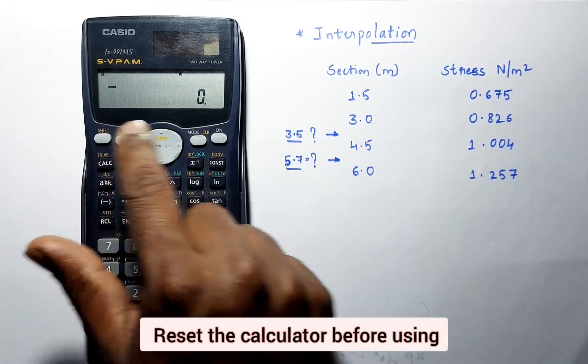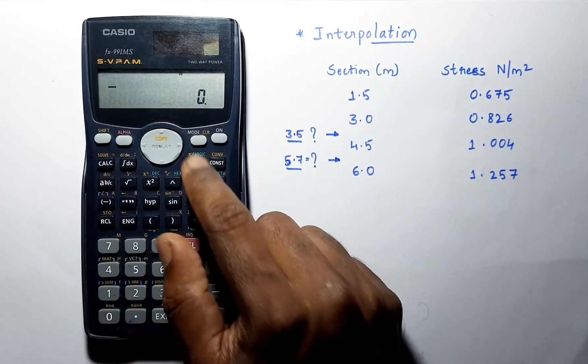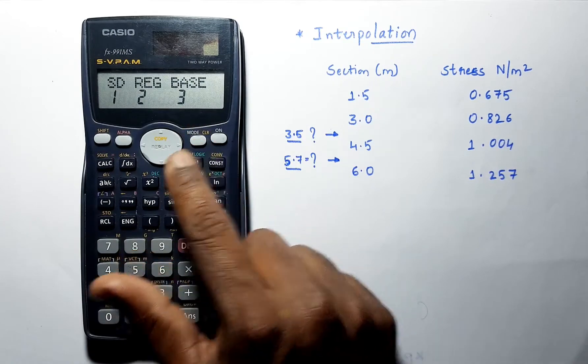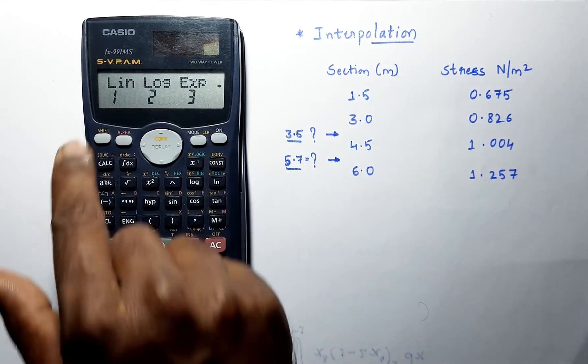Let's reset the calculator before using. Now go to mode and select regression. Select linear.